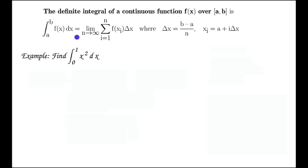We need to identify what these pieces are. A will be 0 and B will be 1. So from that we can compute out what delta X is. Delta X is B minus A over n. n is going to be a generic number that eventually will let tend to infinity. So delta X is 1 over n.